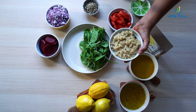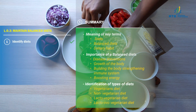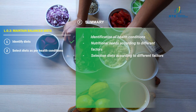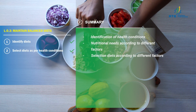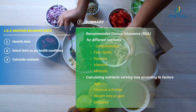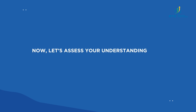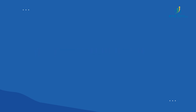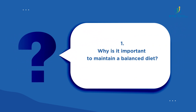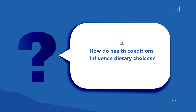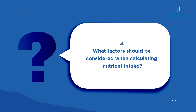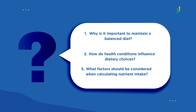In summary, we've covered the importance of identifying diets, selecting diets as per health conditions, and calculating nutrients to maintain balanced diets. Now, let's assess your understanding. Why is it essential to maintain a balanced diet? How do health conditions influence dietary choices? What factors should be considered when calculating nutrient intake? Reflect on these questions to reinforce your learning.